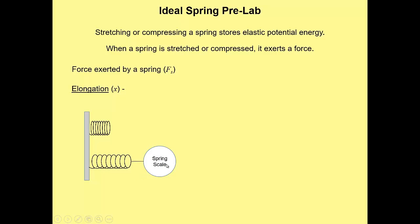We've used spring scales before — vertical ones in the force of gravity lab. This one has a dial on it and is attached to the end of the spring. As you play the video, it's going to stretch the spring — elongate it — and you can read the force being exerted right off the dial face. It's pretty straightforward as far as using the Pivot Interactive for it.